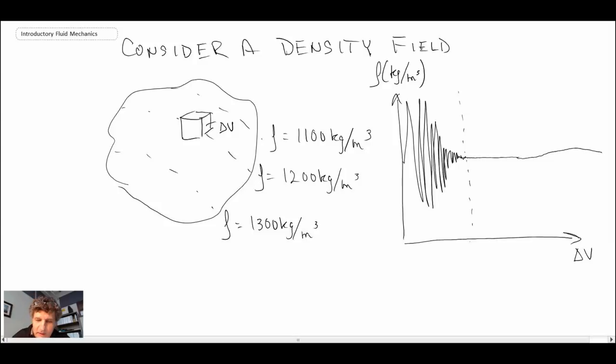And so what we want to do when we're dealing with the continuum approximation, we want to say that we're sampling in delta V's that are larger than our 10 to the minus 9 millimeters cubed. And we also want to operate below where we start getting into the macroscopic uncertainty. And so that would be where, let's say you're going higher up in the atmosphere and the pressure drops, your density would change. So down here on the left, we have what is called microscopic uncertainty. And then over here on the right, we have what is referred to as being macroscopic uncertainty.